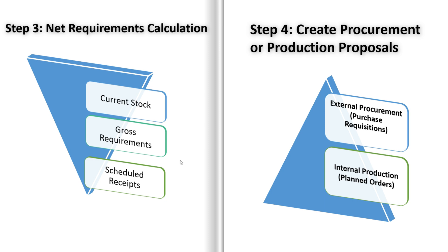Next, create procurement or production proposals. Based on the net requirements calculation, SAP generates procurement or production proposals. For external procurement, SAP creates purchase requisitions for materials that need to be purchased from external vendors — these PRs can later be converted into purchase orders. For internal production, SAP generates planned orders for materials that need to be produced internally — these planned orders are later converted into production orders once the production team is ready to begin manufacturing.